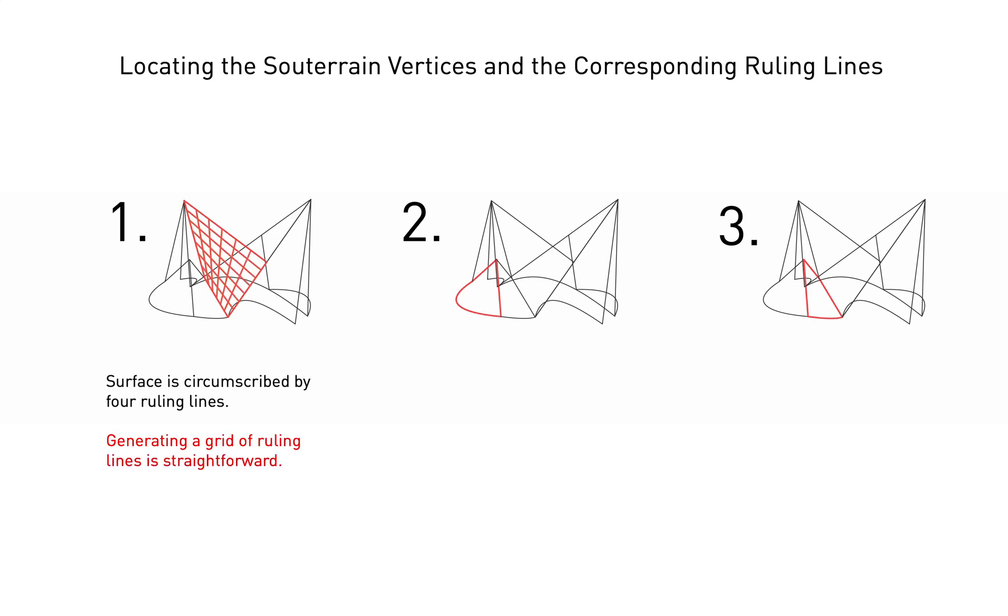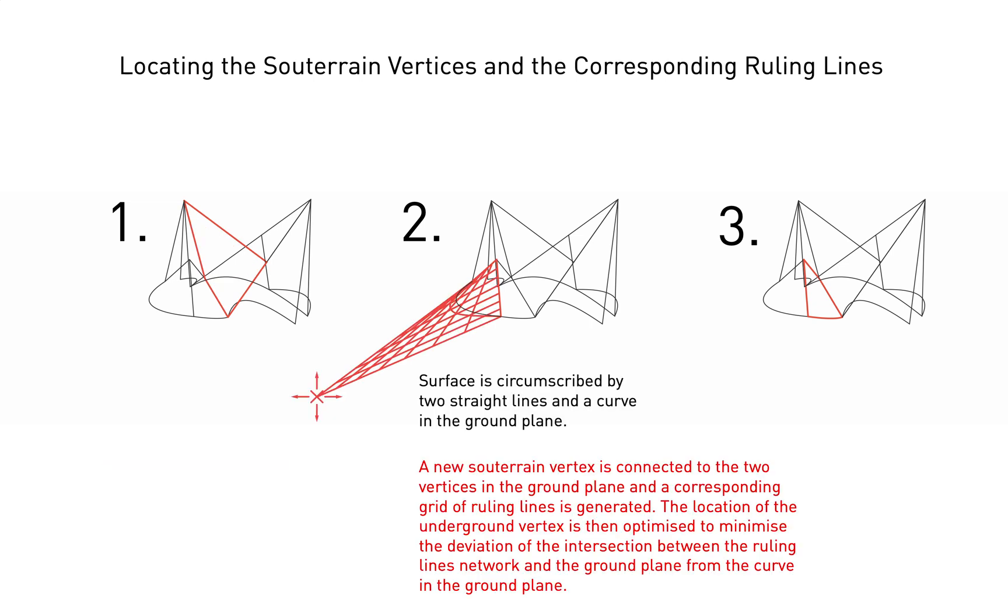For the first category, all four vertices are located in the ground plane or above. They are covered in Xenakis' drawing and therefore known.